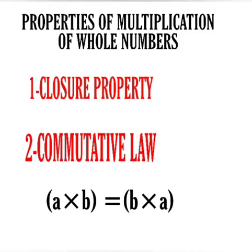First property: Closure property. If A and B are whole numbers, then A cross B is also a whole number. For example, 9 into 8 is equal to 72. Here 9 is a whole number, 8 is a whole number, and the result 72 is also a whole number.